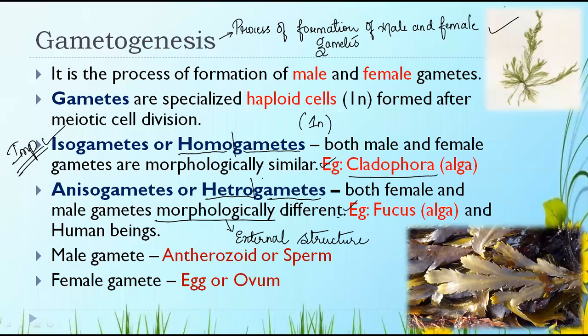Anisogametes or heterogametes are where both male and female gametes are morphologically different — meaning different in external structure. The example is Fucus, which is a brown alga. You may have seen it near the seashore or near rocks in rivers where it creates a brown coloration. We have discussed Fucus when studying algae in the first year.